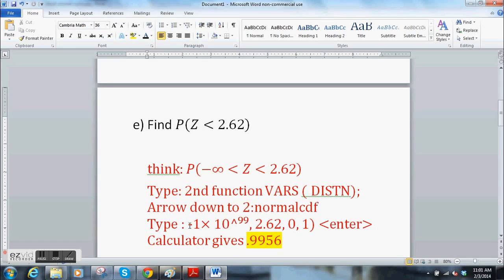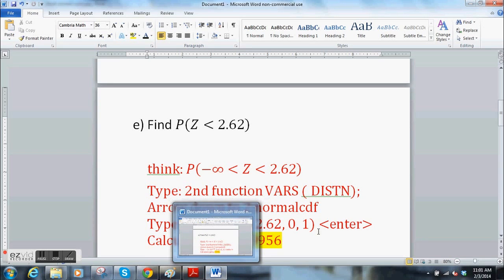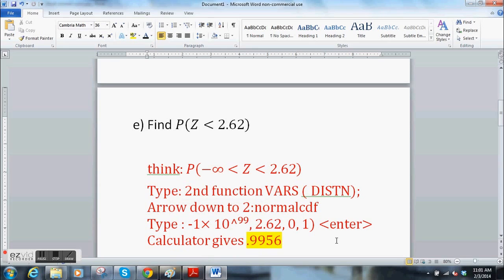Now we're going to type in the process here. The little formula you always use is lower bound, upper bound, mean, standard deviation. So the lower bound is negative infinity. We can't type negative infinity into the calculator. So we type in negative 1. Make sure you can find the negative button. It's over at the bottom right. Negative 1 times 10 raised to the 99. That's the negative infinity. Comma. 2.62. Comma. 0. Comma. 1. And hit enter.